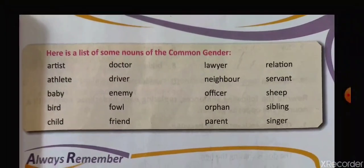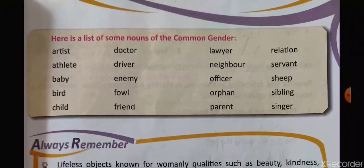Now here is a list of some nouns of common gender. The book gives a list of nouns that are common for both genders — for example: artist, athlete, baby, bird, child, doctor, driver, enemy, foal, friend, lawyer, neighbour, officer, orphan, parent, relation, servant, sheep, sibling, and singer. With this the explanation part of the chapter is over.